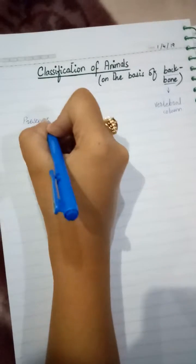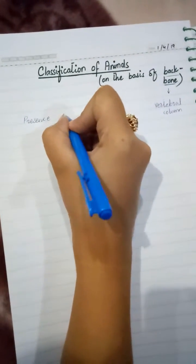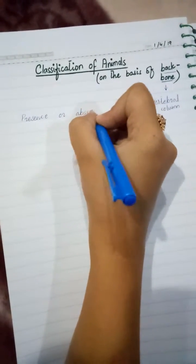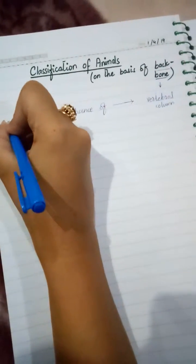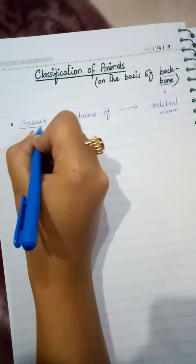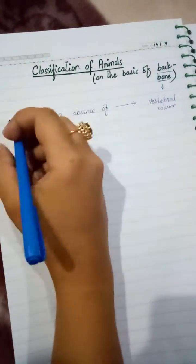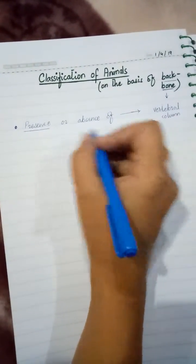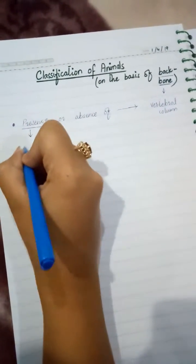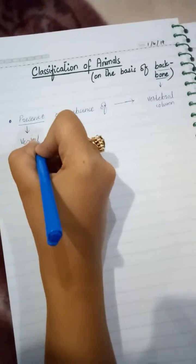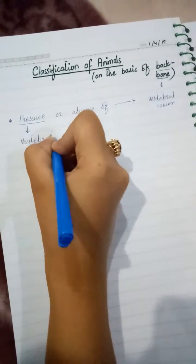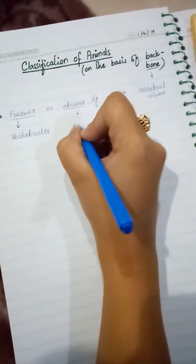Presence or absence of vertebral column. Okay, if the vertebral column is present in the animals, if the vertebral column is present in these animals, then they are known as vertebrates.